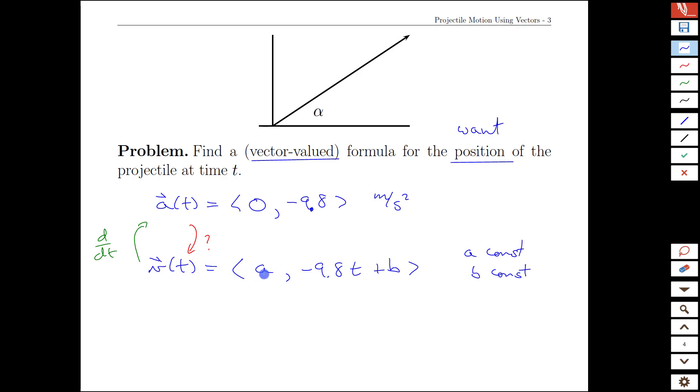Except there are some question marks here. We have this a and b that we don't know yet. Well, a theme that you're going to see in future classes as well as now is that we're going to use the initial conditions and here the initial velocity to find a and b.